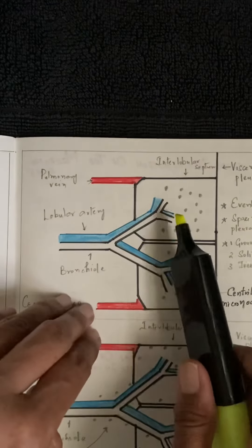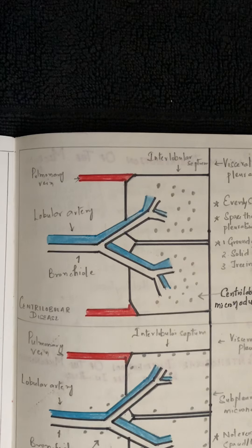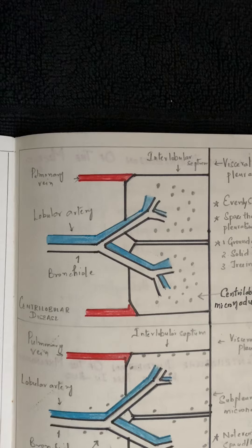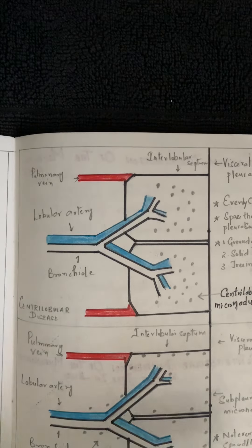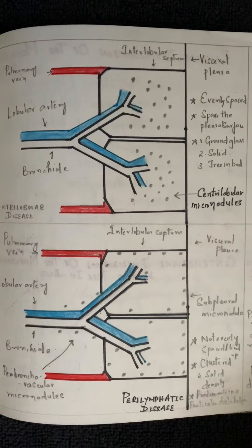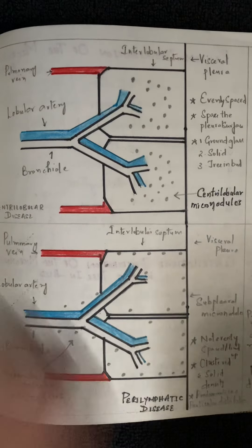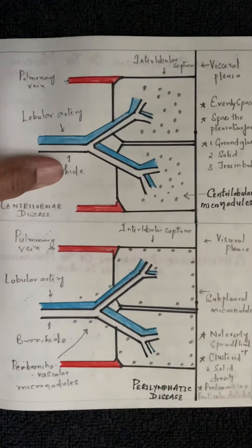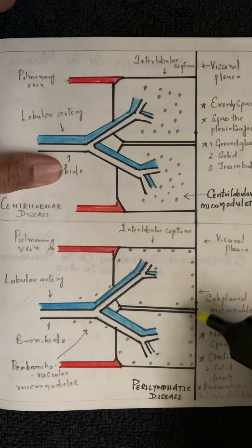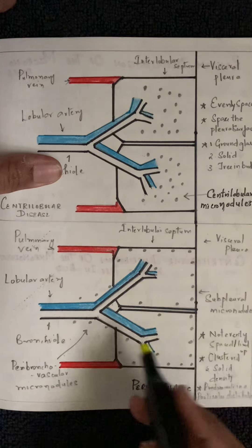Centrilobular micronodules can present in three patterns: as a solid nodule, as ground-glass opacity, or with a tree-in-bud appearance. So centrilobular micronodules present as ground-glass, solid nodules, or tree-in-bud.